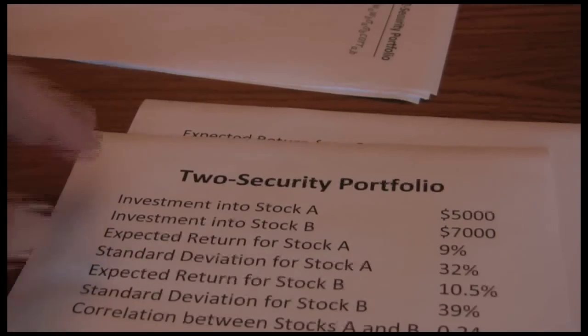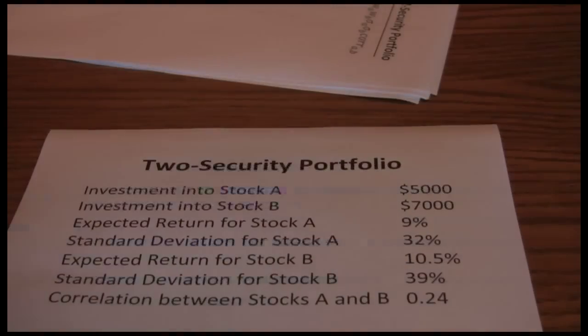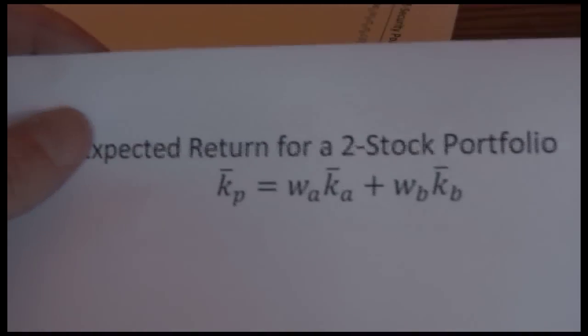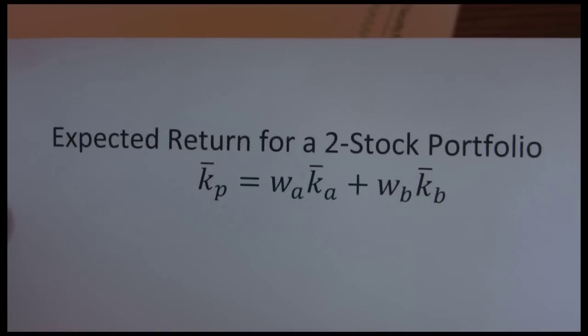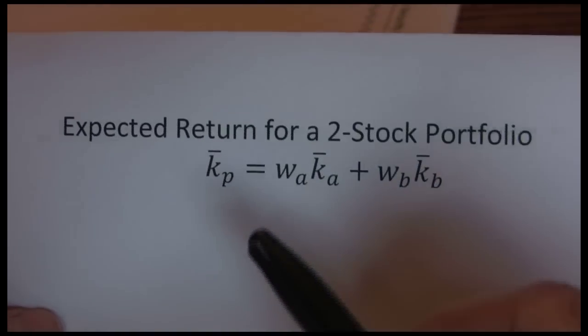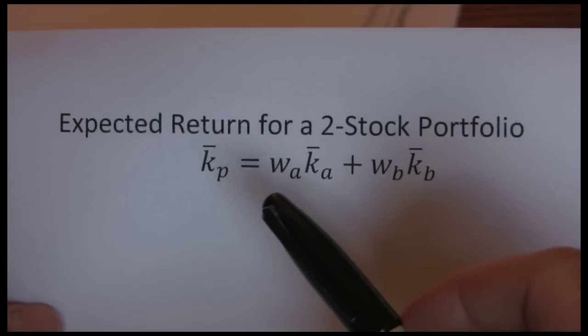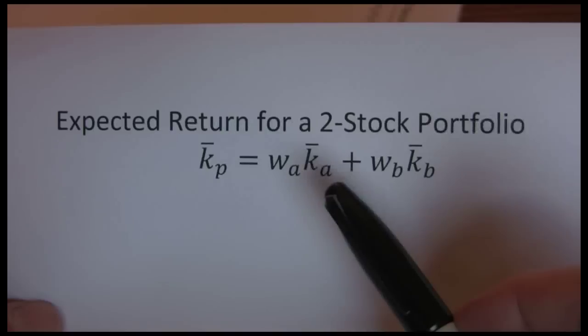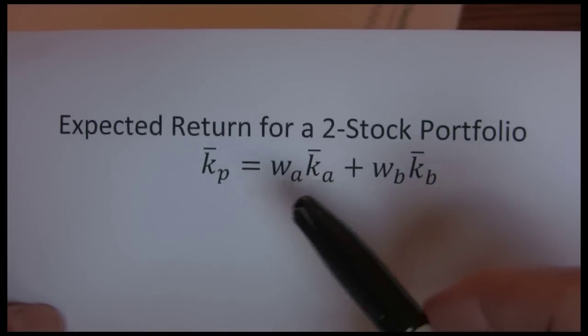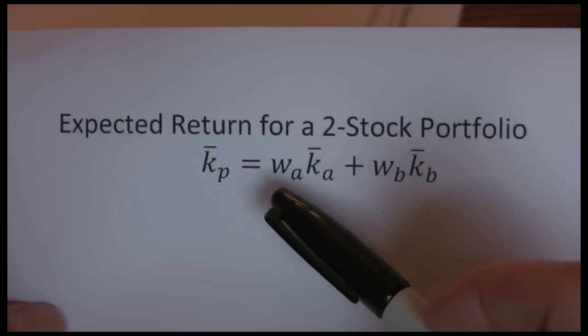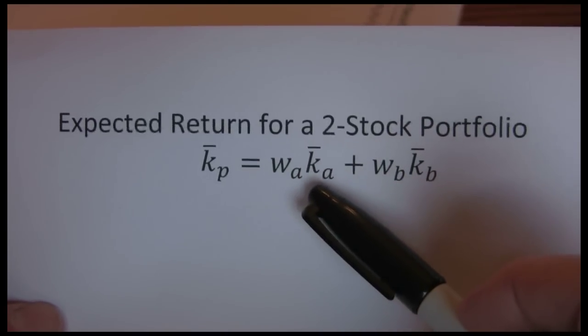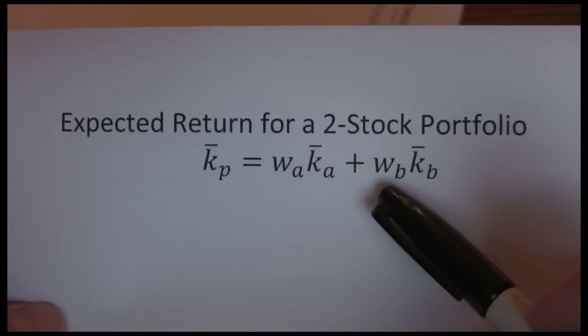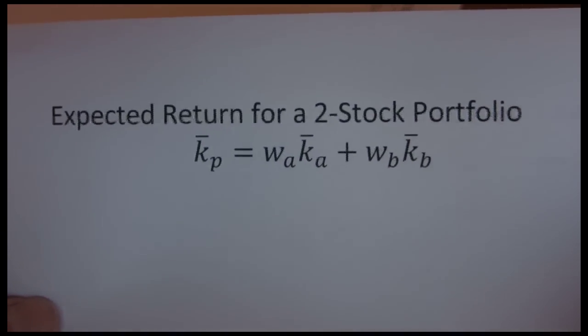Next, we want to get into the calculation of expected return. Expected return for a two-stock portfolio is just a weighted average. The W stands for weights, what proportion of our portfolio goes into that stock, and then the K bar is the expected return. So, what proportion of our portfolio goes into stock A times its expected return. What proportion goes into stock B times its expected return.